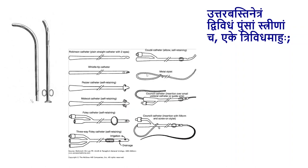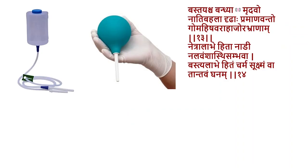Most of the catheters we use now are used to drain the bladder rather than to introduce medicines into the bladder. Chances of needing to introduce medicine into the bladder are lesser now. But of course a tube can act in two ways, so the uttarbasthi yantra can be recognized in the catheters used today.